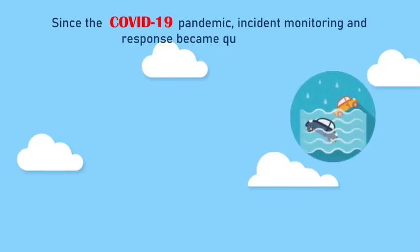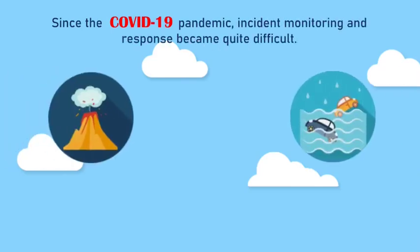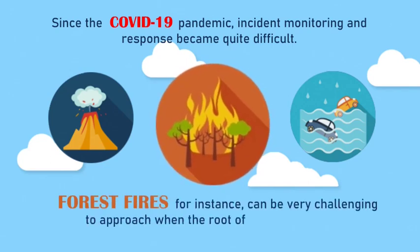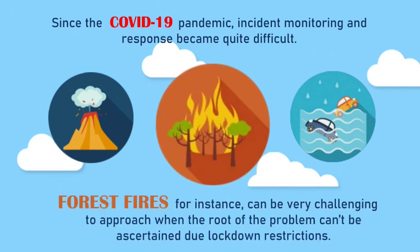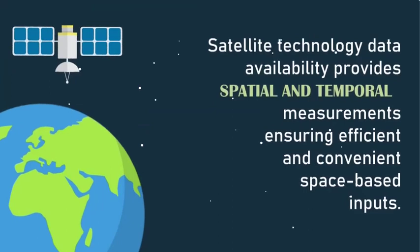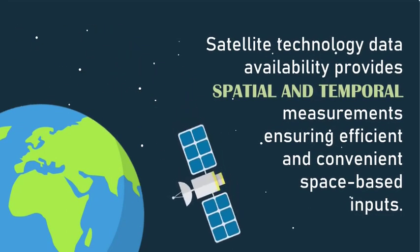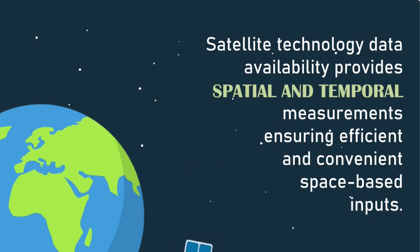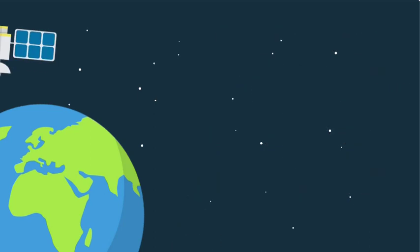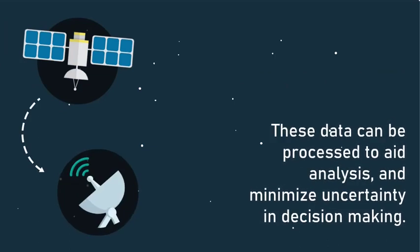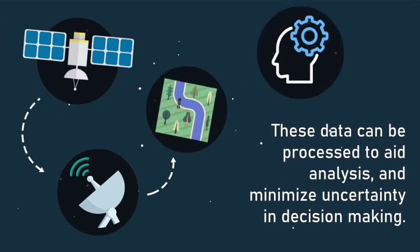Since the COVID-19 pandemic, incident monitoring and response became quite difficult. Forest fires, for instance, can be very challenging to approach when the root of the problem can't be ascertained due to lockdown restrictions. Satellite technology data availability provides spatial and temporal measurements, ensuring efficient and convenient space-based inputs. These data can be processed to aid analysis and minimize uncertainty in decision-making.